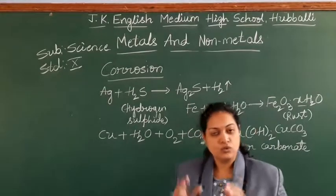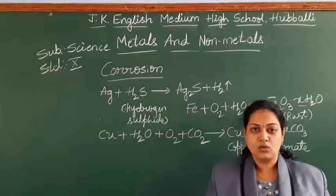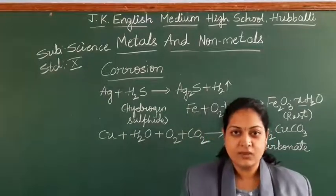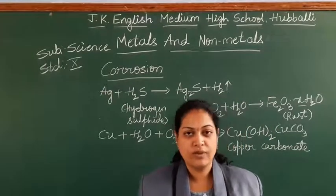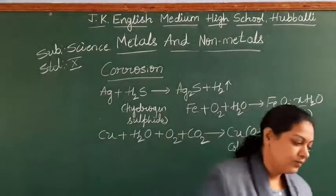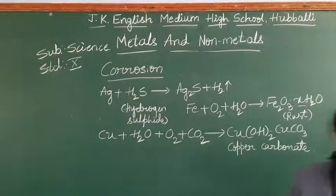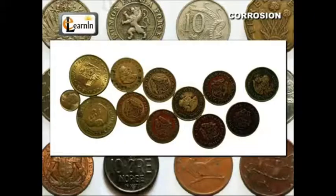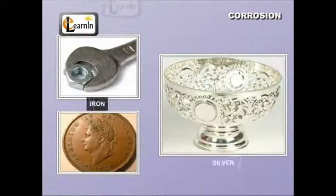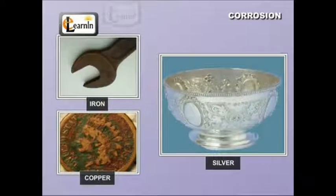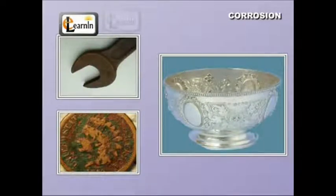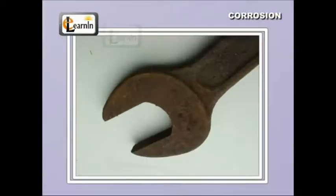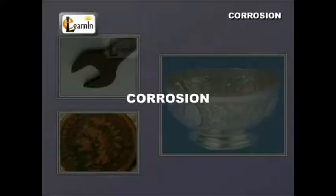If there are so many problems like corrosion, obviously there will be some remedy. Yes, we find the remedy — that is prevention of corrosion. The metals, when exposed to air and water, will lose their shining surface. Examples like iron, copper, silver, etc. Iron rusting is nothing but corrosion.